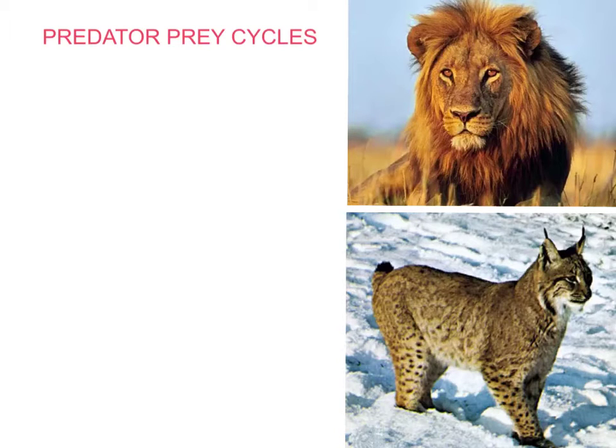Now this is something that comes up in both key stage 3 and 4. It's very easy to define predator and prey.